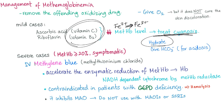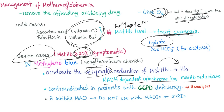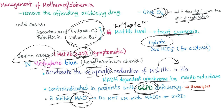Vitamins treat cyanosis, but giving oxygen, although it helps the patient, doesn't cure the skin discoloration. For severe cases — methemoglobin more than 20% with severe symptoms — use IV methylene blue, also known as methyl thioninium chloride. It accelerates the enzymatic reduction from methemoglobin to hemoglobin via NADH-dependent cytochrome B5 methemoglobin reductase.